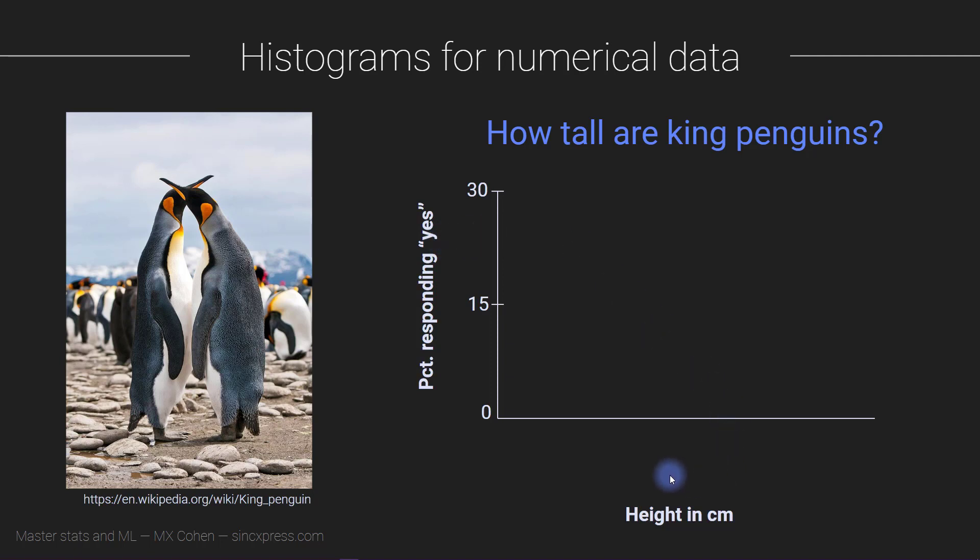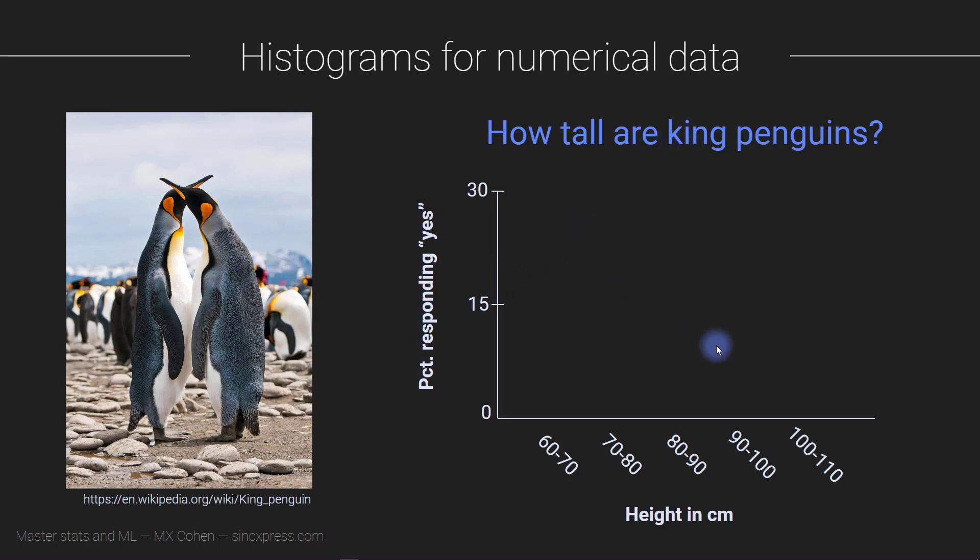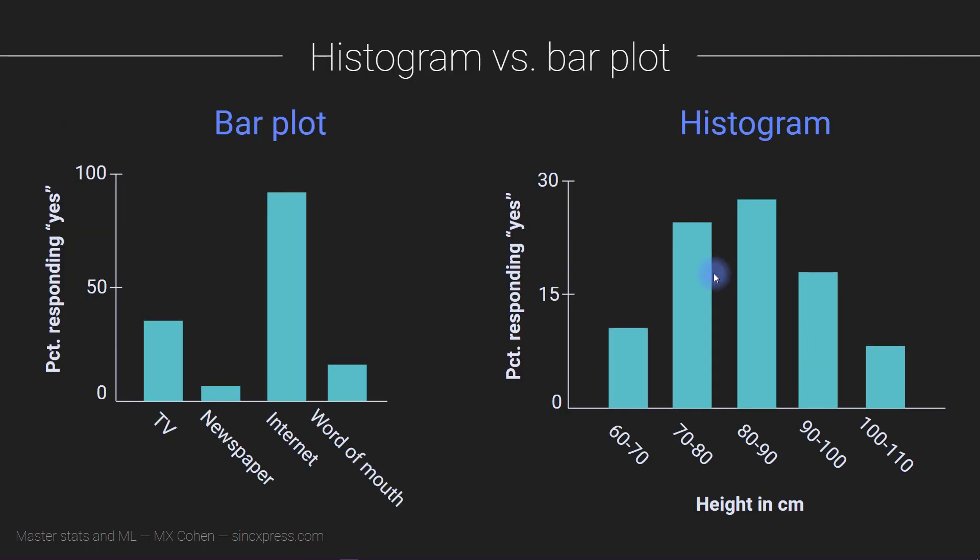What we do with numerical data is bin the data into some reasonable categories or bins. So we might have height in centimeters from 60 to 70, 70 to 80 and so on. Then we survey a bunch of king penguins in Antarctica and want to know how tall they are. We find that 28 percent of penguins are between 80 and 90 centimeters, some are shorter and some are taller. This looks a little bit like a bar plot but they're actually different.